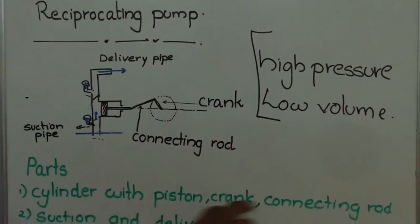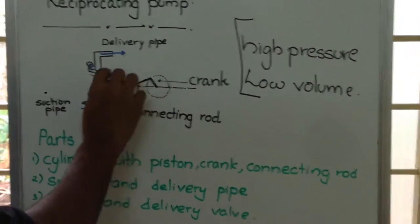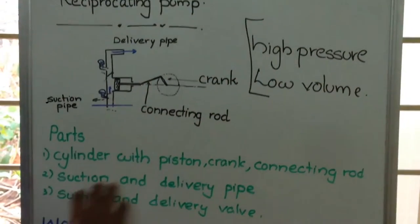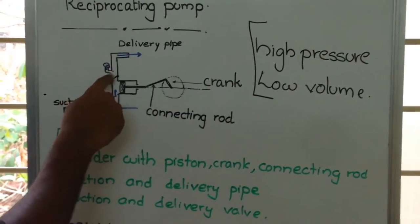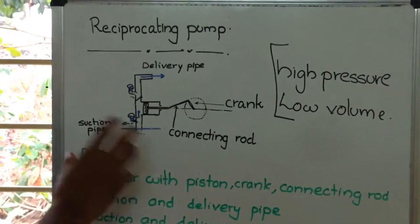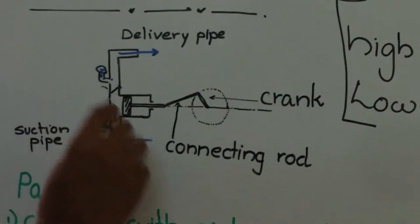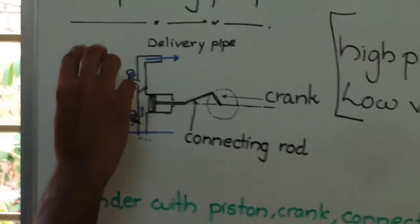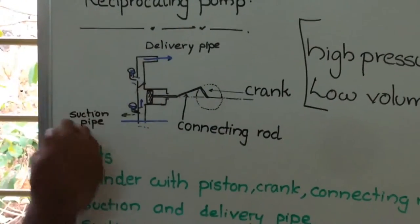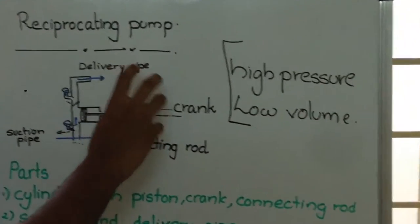The main parts include: cylinder with piston, crank, connecting rod, suction and delivery pipe, and suction and delivery valves. These are one-way valves. There are also two air vessels whose function will be described later. The crank is connected to an electric motor.